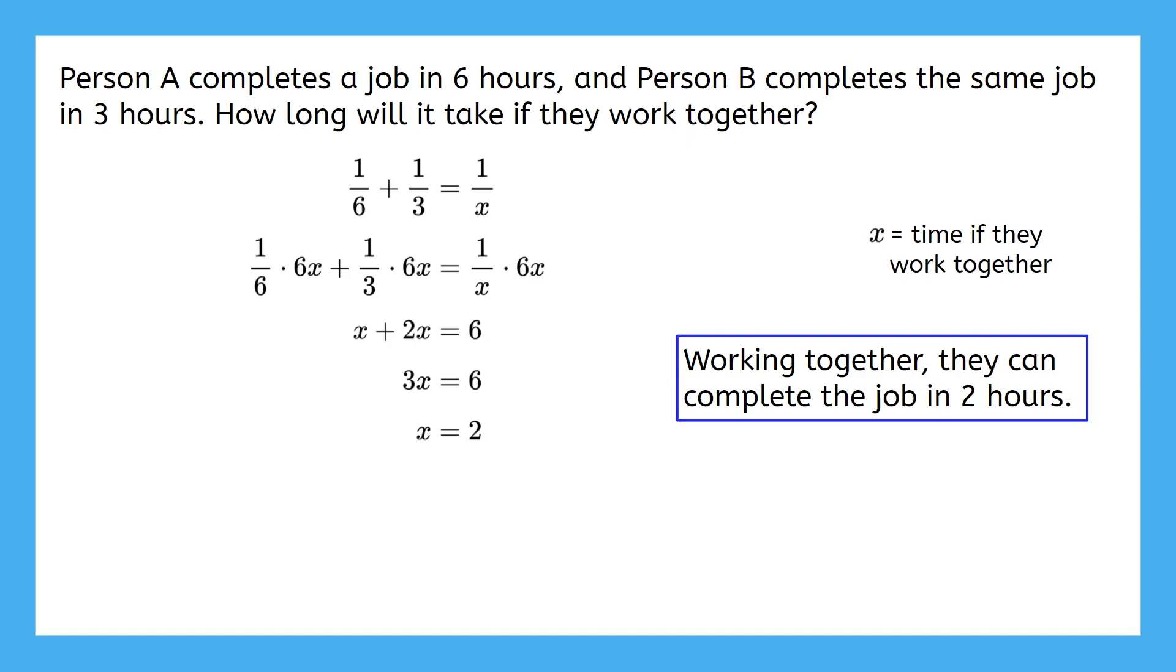This means working together they can complete one job in two hours. Person B was the faster worker and can complete the job all alone in three hours. So it would make sense if there was another worker to help, the job would get done even faster than that.